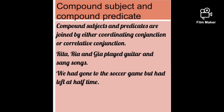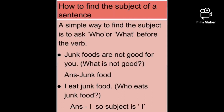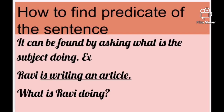How to find the subject of a sentence: a simple way is to ask who or what before the verb. For example, 'Junk foods are not good for you' — what is not good for you? Junk food, so junk food is the subject. 'I eat junk food' — who eats? I, so I is the subject. How to find the predicate: ask what the subject is doing.